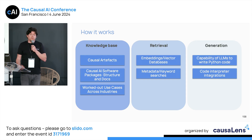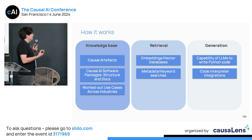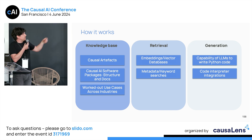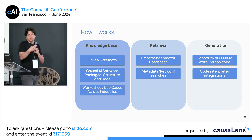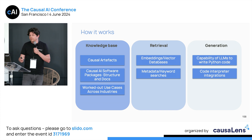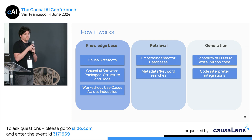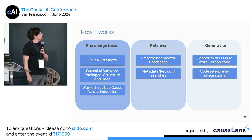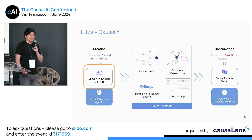From an information retrieval perspective, in addition to causal artifacts, we now provide our agent the entirety of our software packages — the structure, each class, each function, each method — as well as worked-out use cases across many different industries. We use a variety of techniques and leverage the ability of large language models to understand and write Python code and put things together.